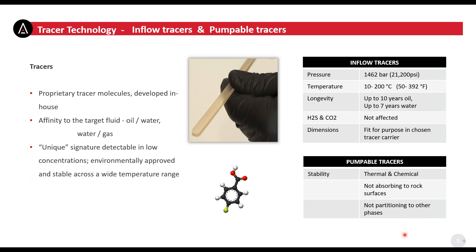So what are chemical tracers? These are molecules. Our tracer molecules are developed in-house — the molecule design will target the fluid, whether oil, water, or gas. Our unique tracers are detectable in low concentrations, environmentally approved, and stable across a wide temperature range. We identify our tracers as either inflow tracers or pumpable tracers. The inflow tracers are embedded in polymer rods during manufacturing — we have polymer rods to target water and polymer rods to target oil. When the polymer rods are in contact with or wetted by the target fluid, the tracers are released at a known rate for the temperature range, meaning we can confirm how long we can detect tracers exposed to the target fluid.